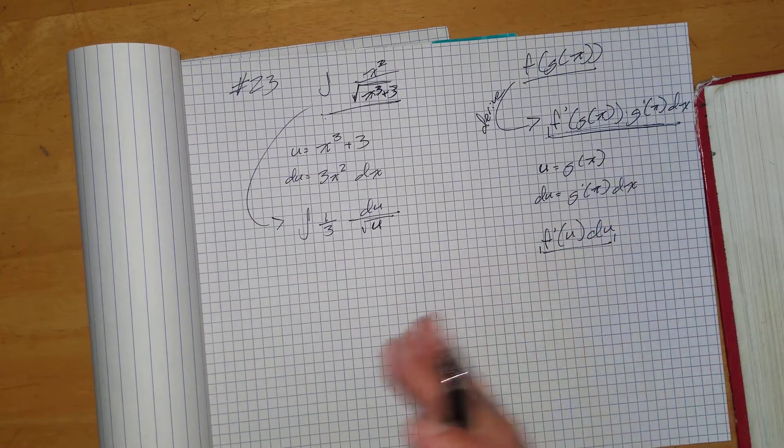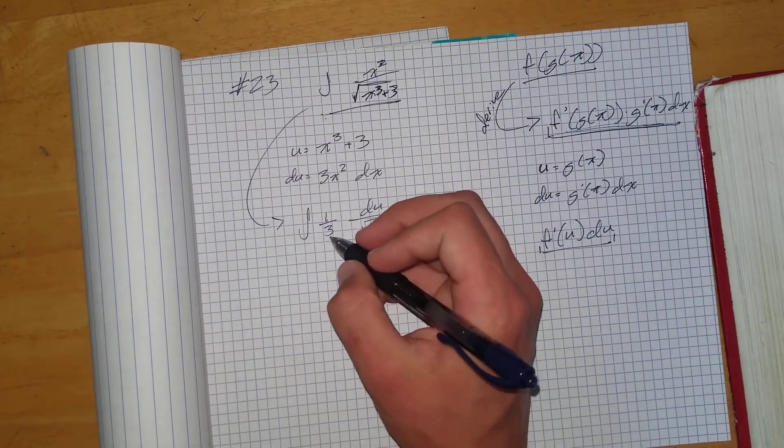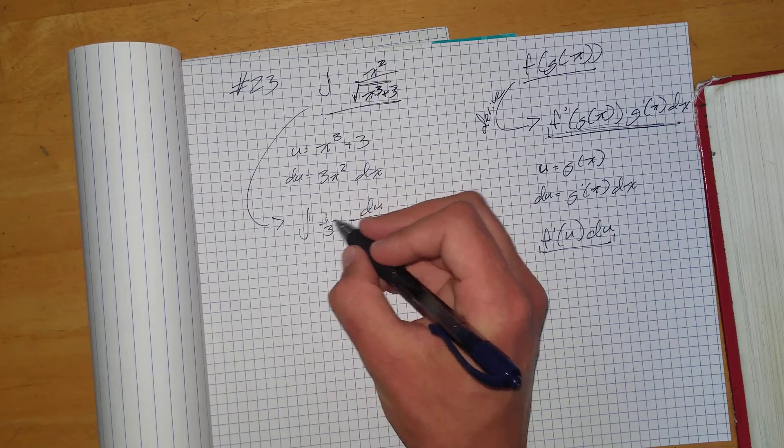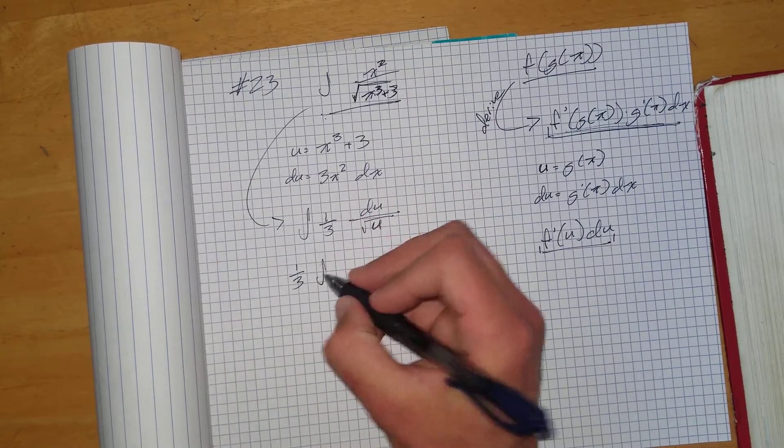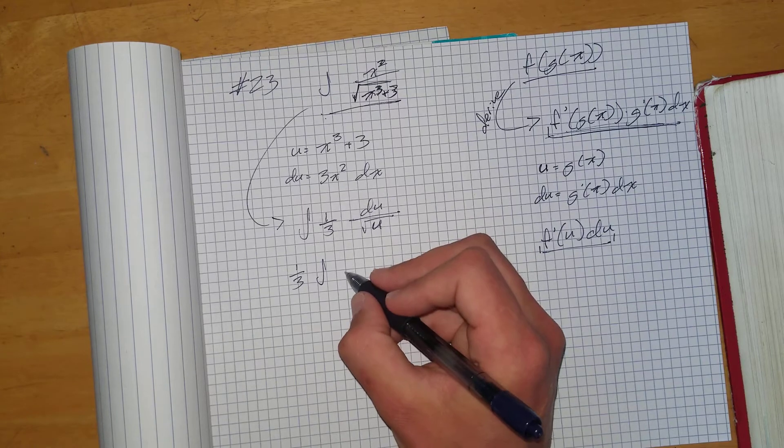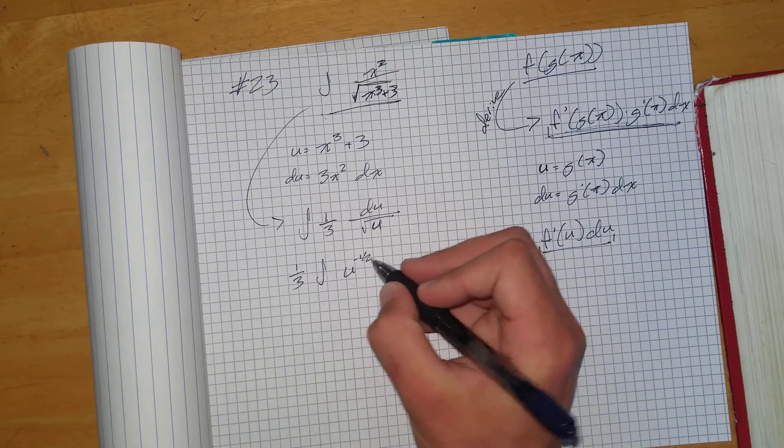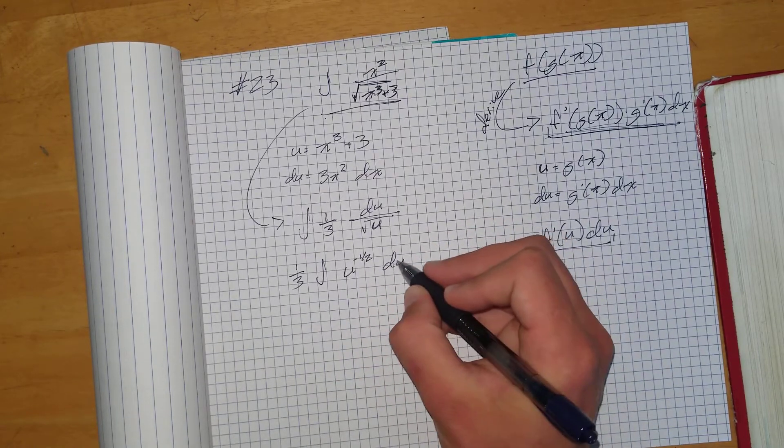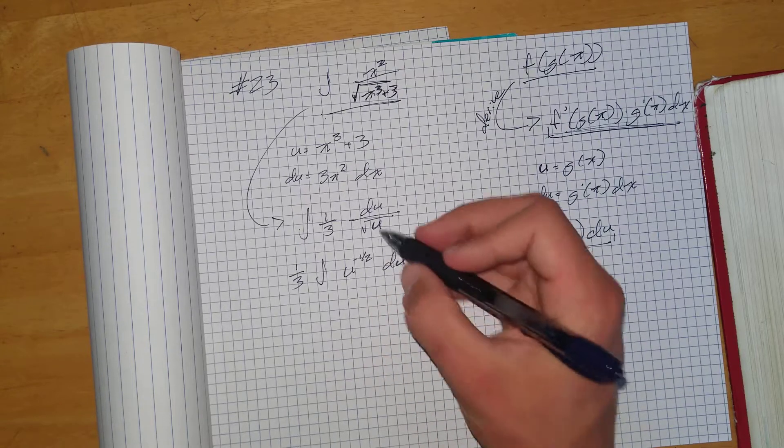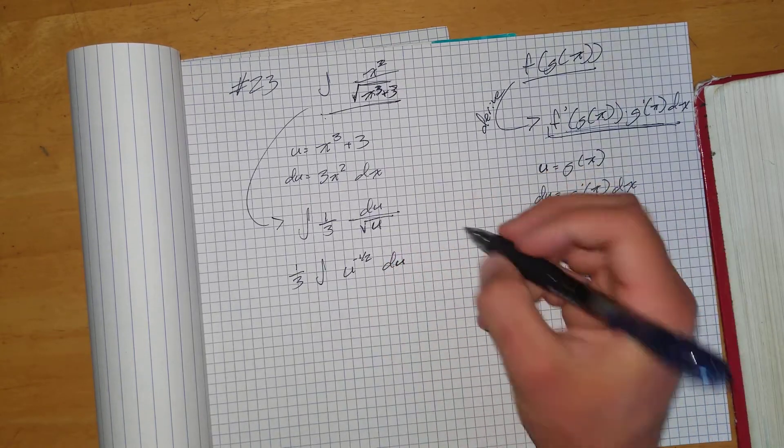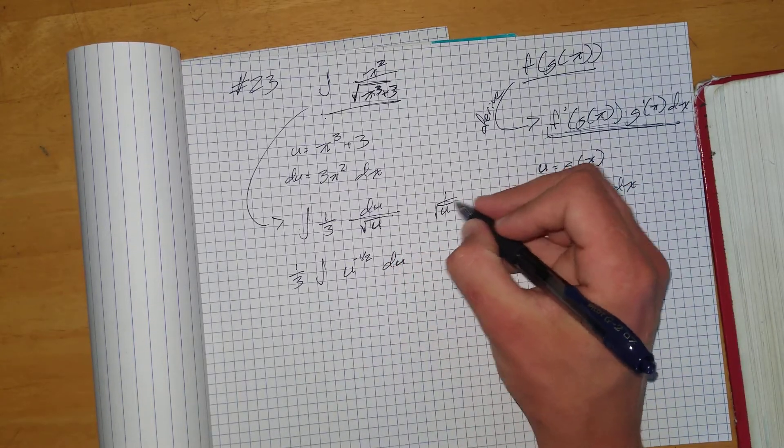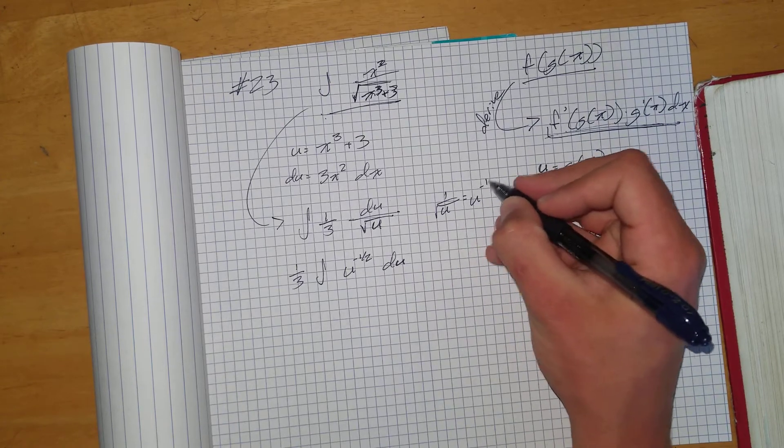Now we actually have to integrate it. So we can use our product rule of integration to pull out this 1 third. So now we're just dealing with u to the negative 1 half times du. So I got u to the negative 1 half because u over u was u to the negative 1 half.